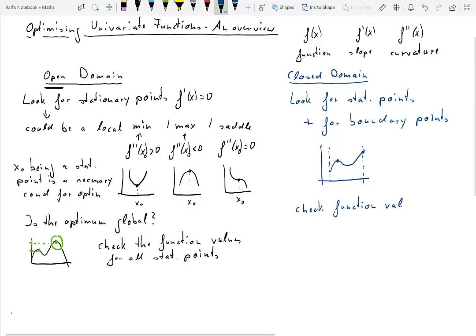So what if you're working on a closed domain? So here you need to check the function values as in the open domain of all stationary points.